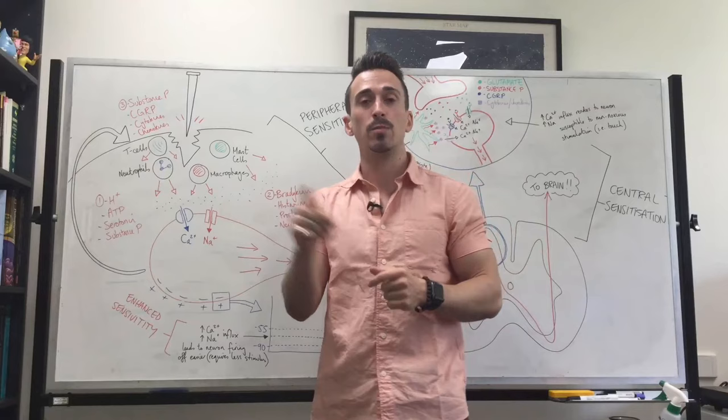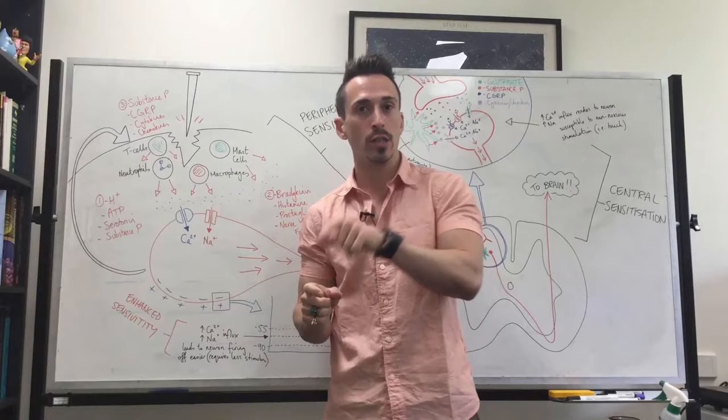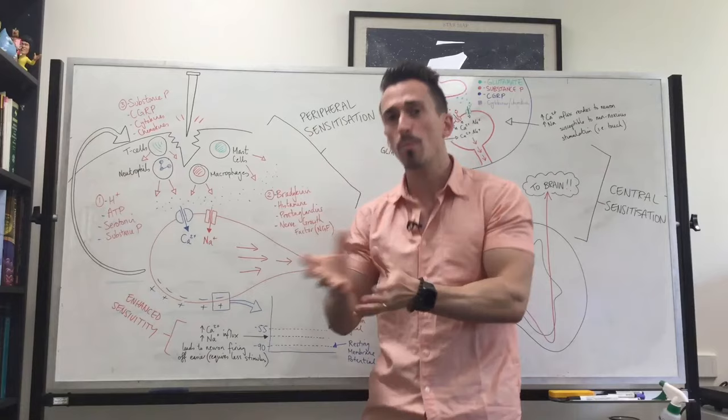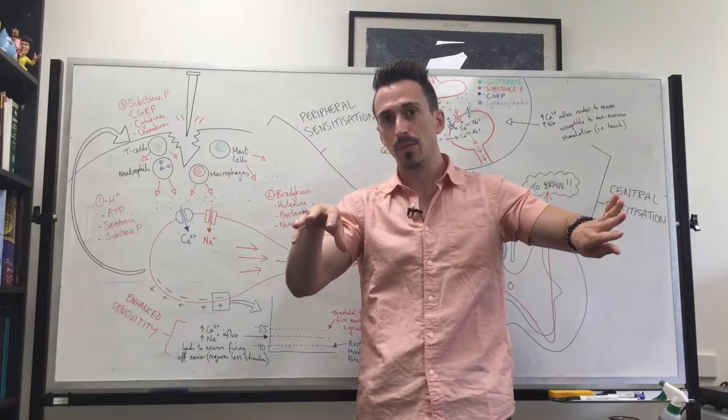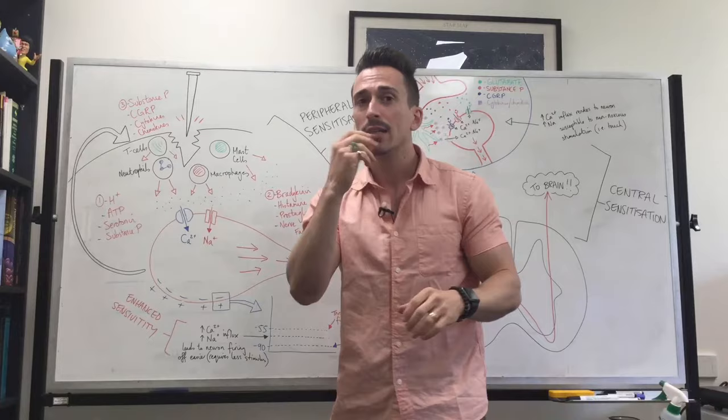Chronic pain usually arises after an individual has experienced acute pain but hasn't controlled or managed that acute pain over time. What happens is the painful stimulus amplifies itself — so much so that even once the initial stimulus has gone, whether it's a cut, bruise, trauma or whatever it may be, the pain remains. This is termed sensitization, which we're going to talk about today.